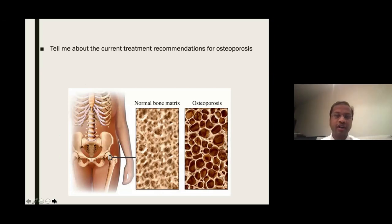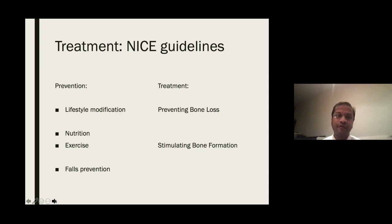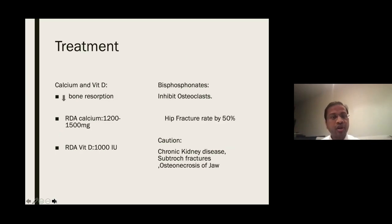How would you treat a patient with osteoporosis? NICE treatment guidelines are divided into preventive and treatment strategies. Everyone should receive lifestyle modification advice, nutritional advice, an exercise program, and falls prevention for the geriatric population. Treatment can be broadly divided into agents that prevent bone loss and those that stimulate bone formation. Calcium and vitamin D reduce bone resorption. The recommended daily allowance is 1,200–1,500 mg of calcium and 1,000 international units of vitamin D.